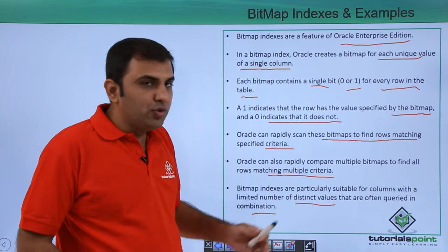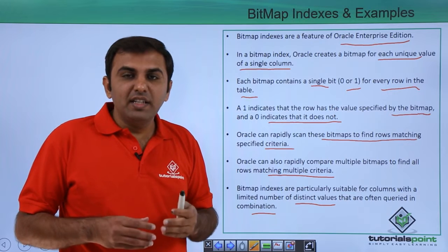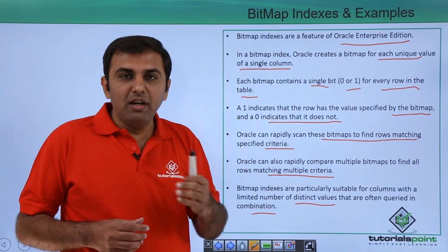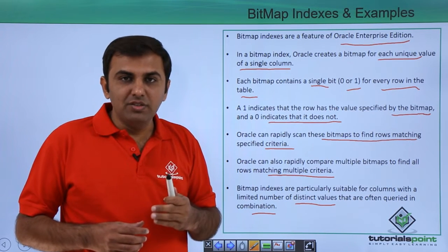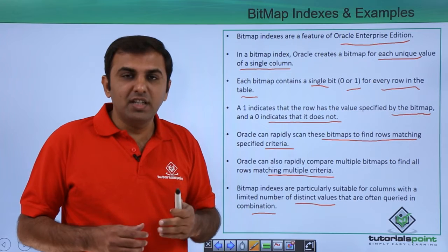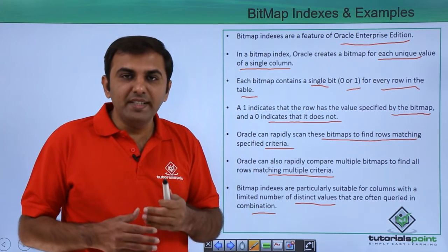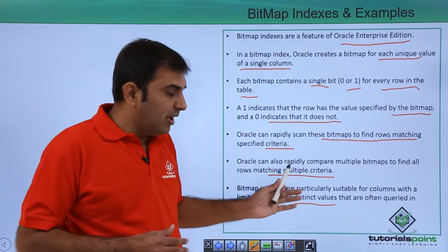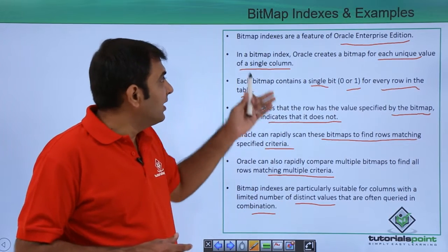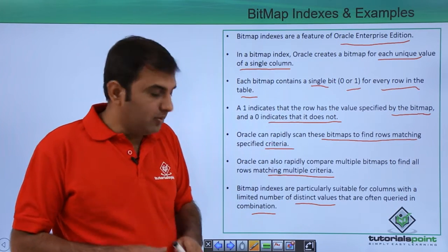If you have very few distinct values — like male or female for gender, or single or married for marital status — this kind of column with very few distinct values is where bitmap index is basically created.